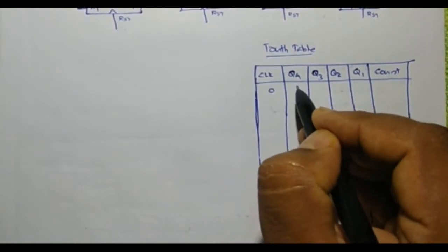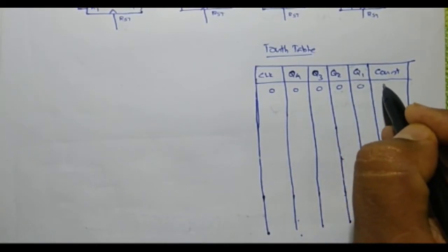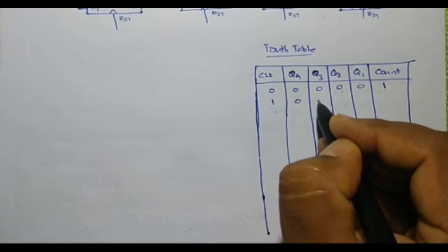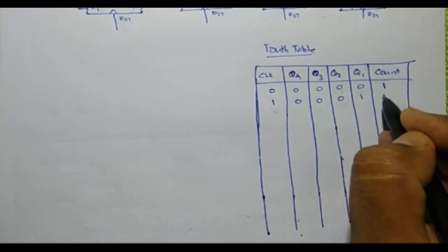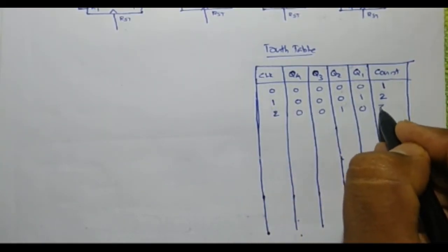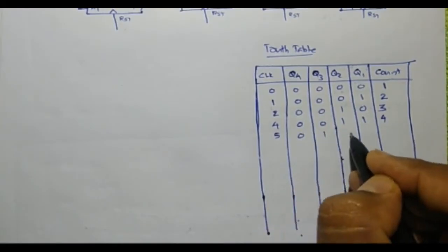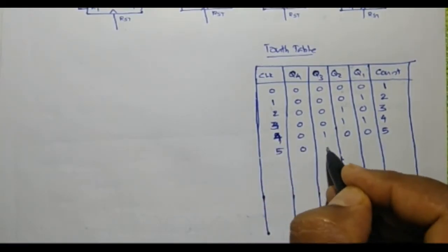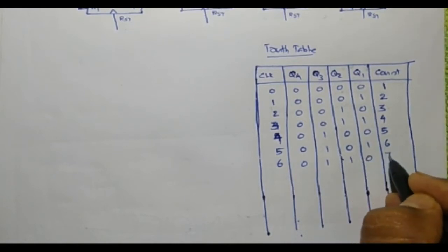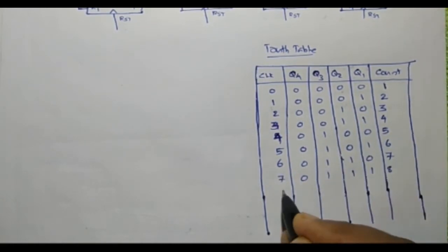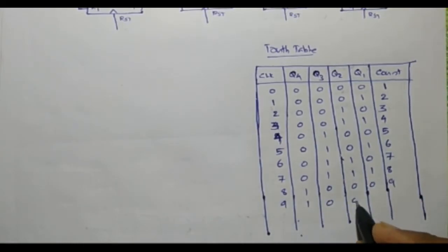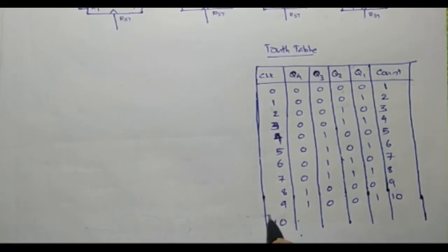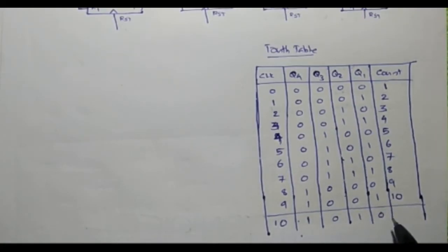For the zeroth clock, Q4, Q3, Q2, and Q1 are 0. For the first count, the output is 0001. At the 10th clock, the output will be 1010. This means Q4 is 1, Q3 is 0, Q2 is 1, and Q1 is 0.